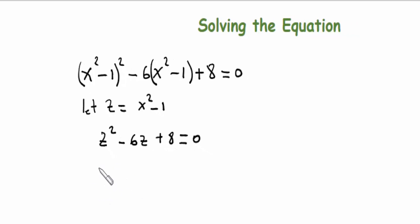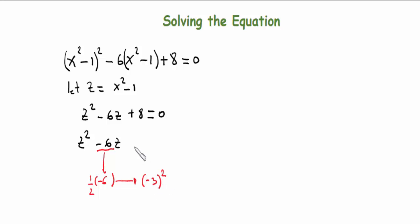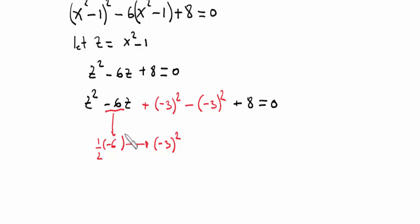We have z squared minus 6z. To complete the square, we take half of the coefficient of z: half of minus 6 is minus 3. We add (minus 3) squared inside, and subtract it again to keep the equation balanced, then bring down plus 8, all equal to zero.